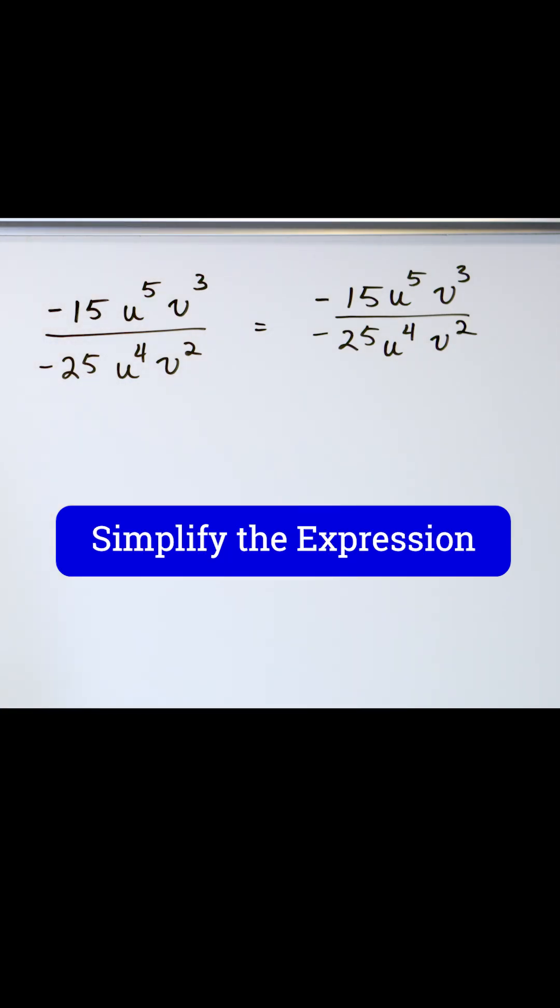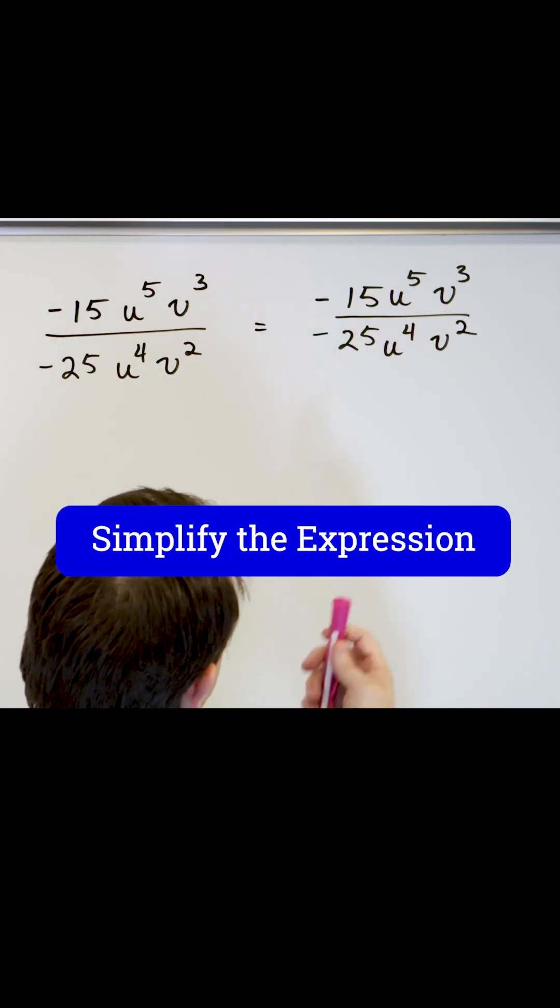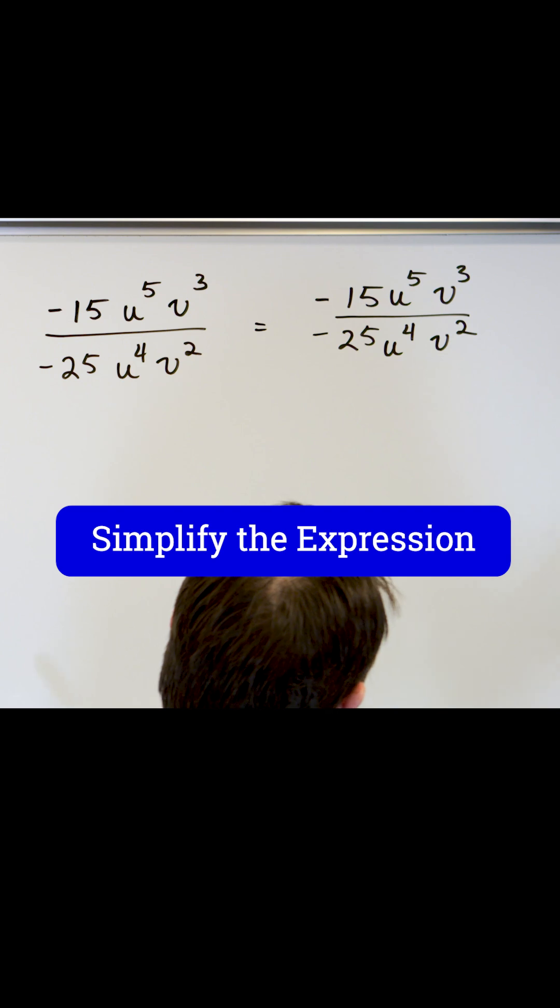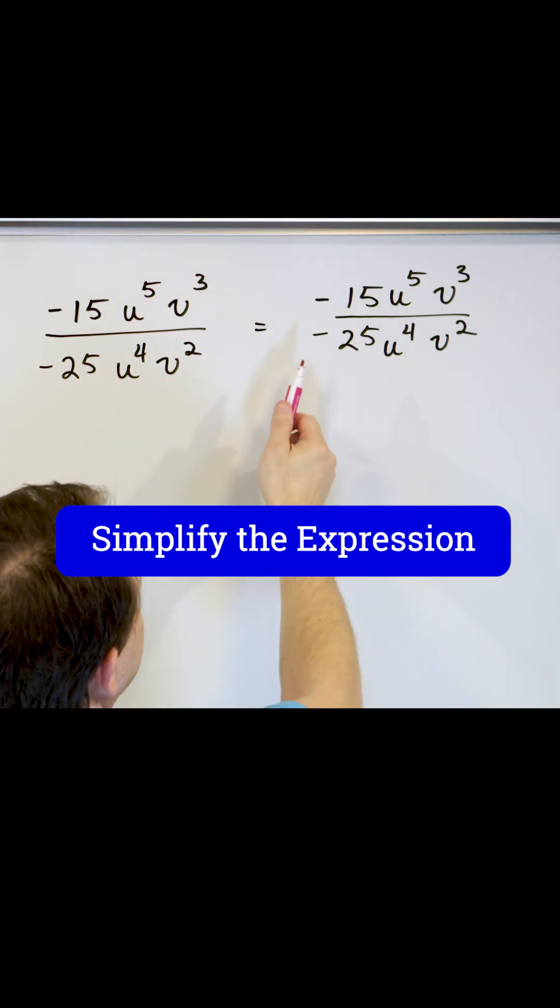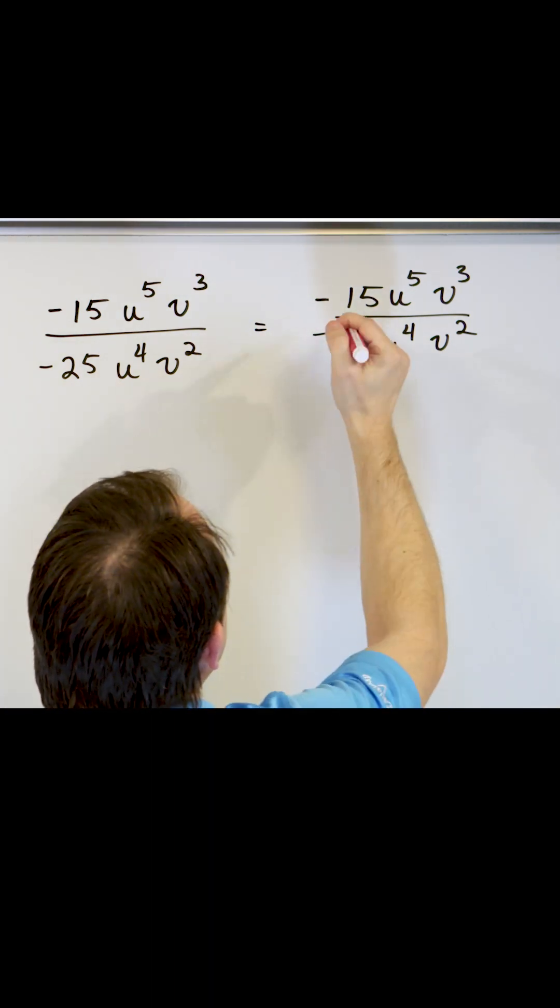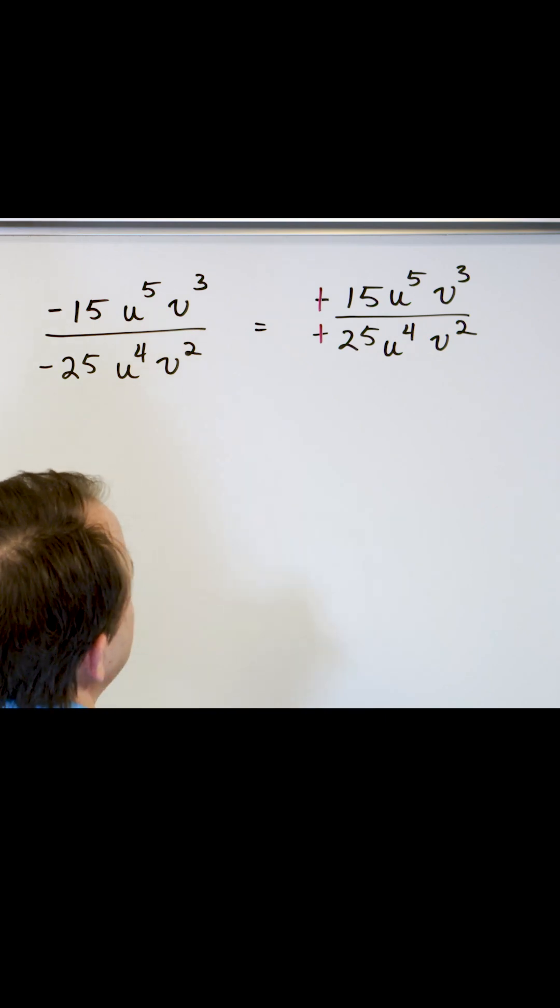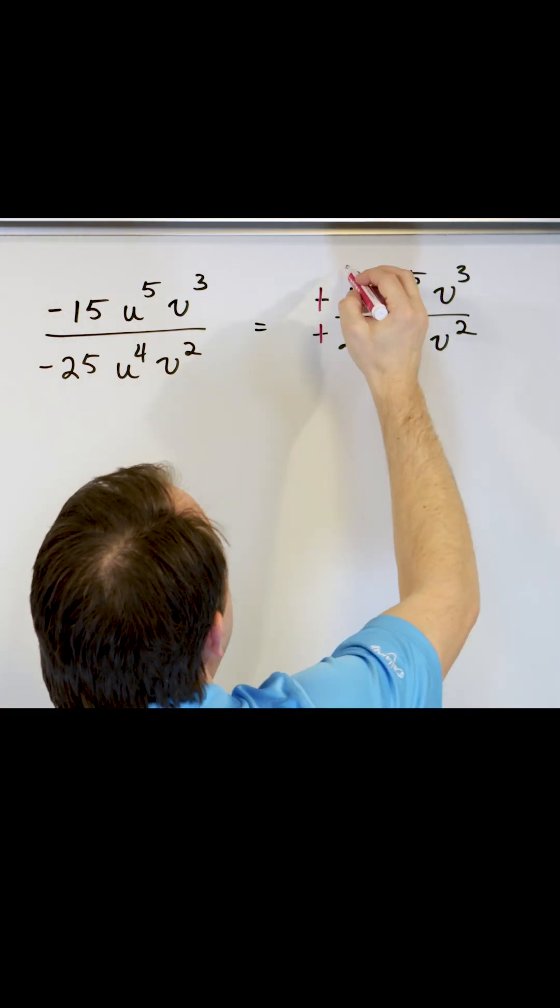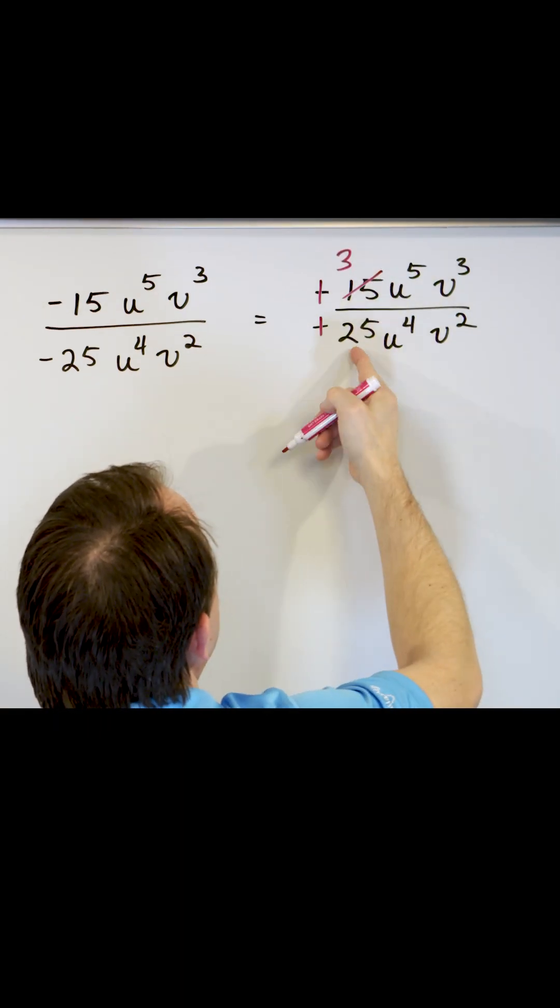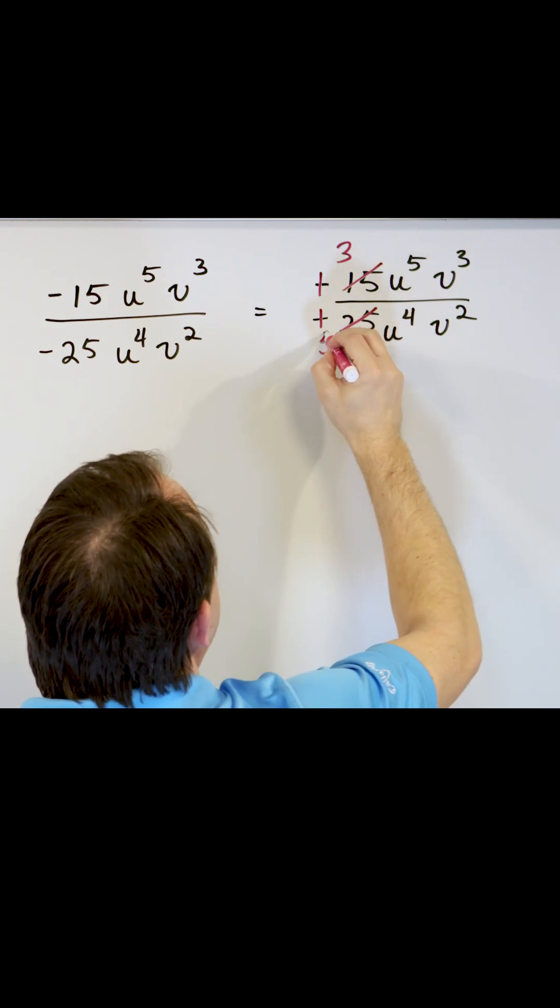So we have to decide what to do. First we go and tackle the numbers. We have 25 and 15, so immediately you should think you can divide both by 5. But we also have negative divided by negative, so you can strike through both of those, making them positive. Then for the 15, we'll divide by 5, giving us 3. The 25 divided by 5 will give us 5.